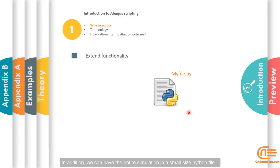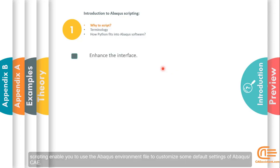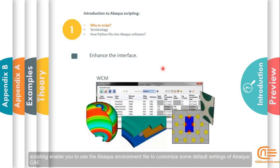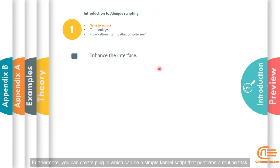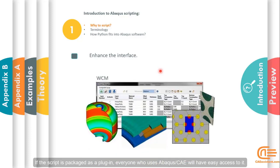Of course, in addition, we can have the entire simulation in a small-sized Python file. Scripting enables you to use the Abaqus environment file to customize some default settings of Abaqus CAE. Furthermore, you can create a plugin which can be a simple kernel script that performs a routine task. In this scenario, the advantage is that of convenience. If the script is packaged as a plugin, everyone who uses Abaqus CAE will have easy access to it. For example, the below picture represents a plugin for designing composite tanks.